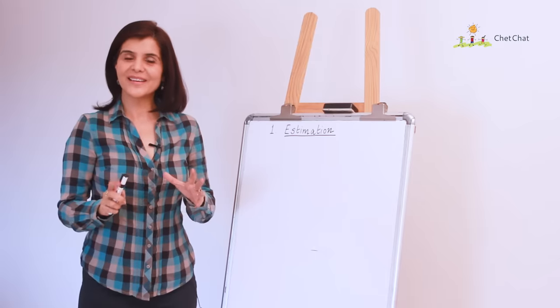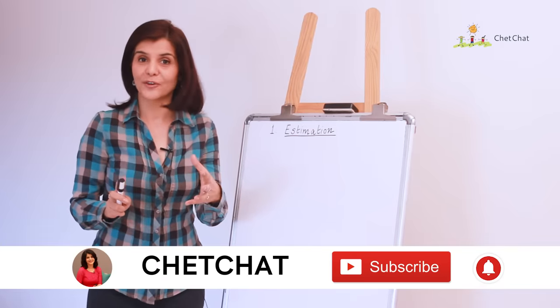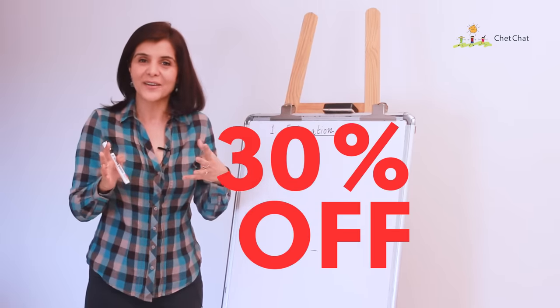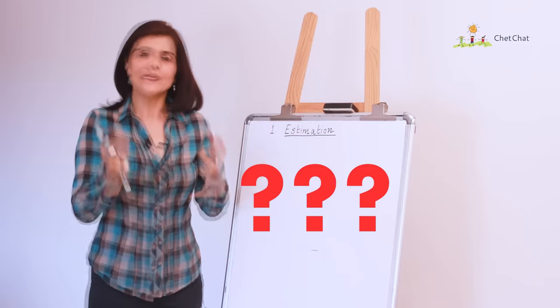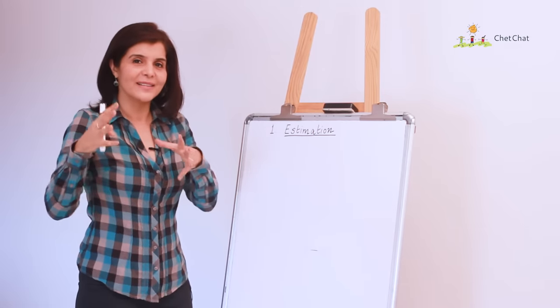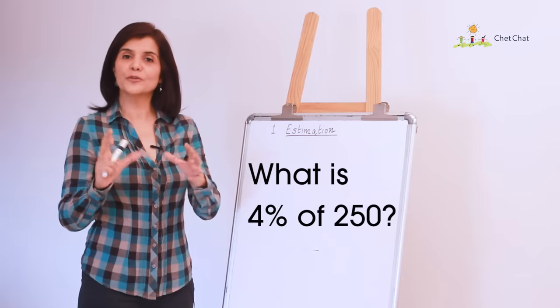Trick number 1 is called estimation. So many times we walk into a restaurant when it says 12% off or we walk into a store and it announces 30% off and we are freaking out about what it exactly means. So, how about we learn a quick trick of how to estimate mentally right there in the store or the restaurant. So, what is 4% of 250?